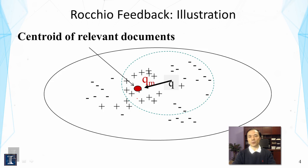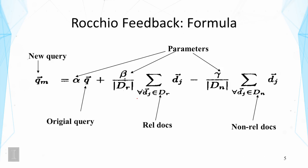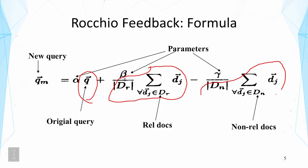Of course, we can also consider the centroid of negative documents, and we want to move away from them. Geometrically, we're talking about moving the vector closer to some vectors and away from others. Algebraically, this is expressed in a formula. The original query vector is combined with the centroid vector of relevant documents — the average of their vectors — and the centroid of non-relevant documents.